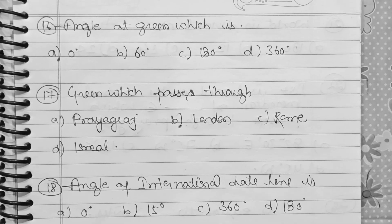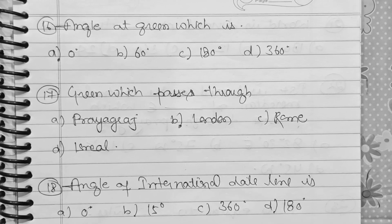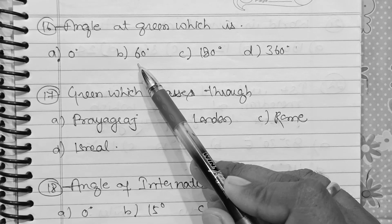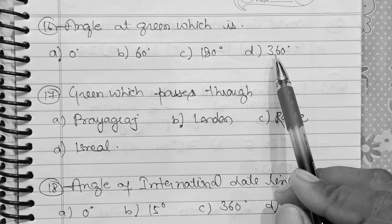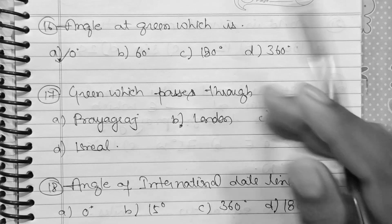Question 16: What is the angular displacement of the line of longitude at Greenwich? Option A: 0 degrees. Option B: 60 degrees. Option C: 180 degrees. Option D: 360 degrees. The correct answer is 0 degrees.